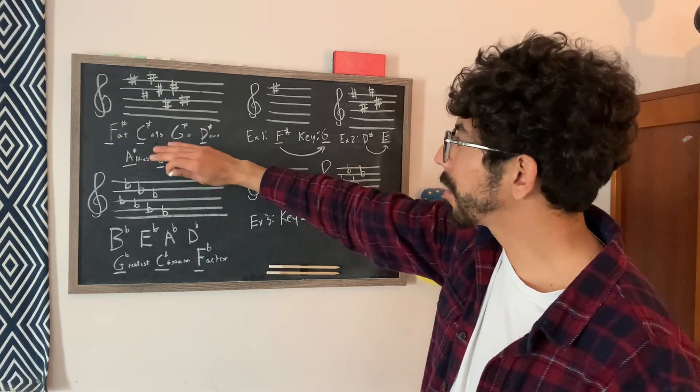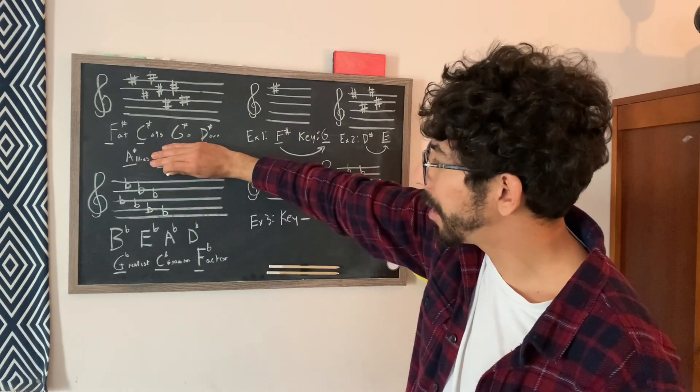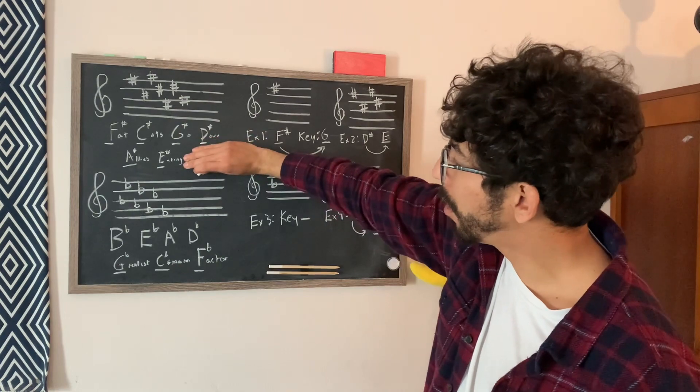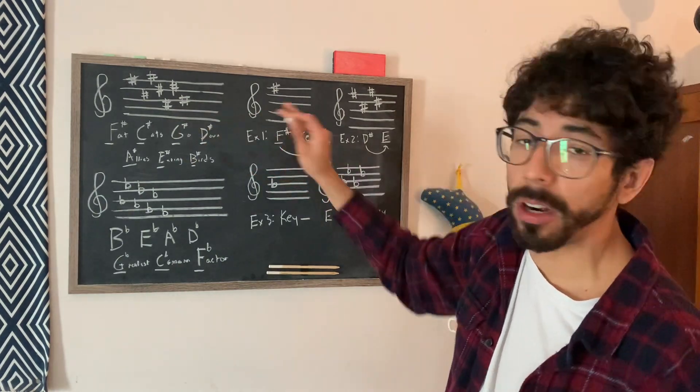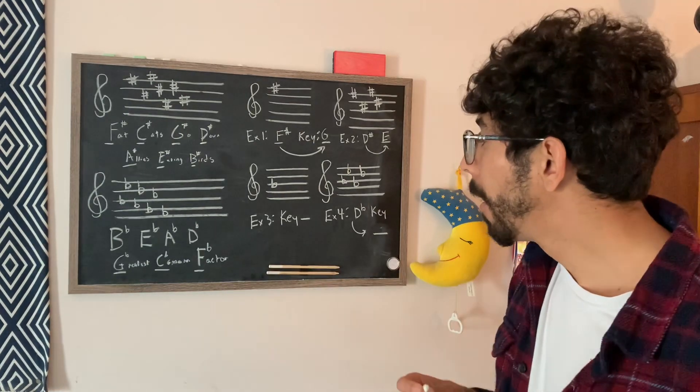it just kind of goes to the key of B, which would be after A sharp, or yeah, key of B has A sharp in it, F sharp major, and then C sharp major, which is very uncommon, but it is possible.